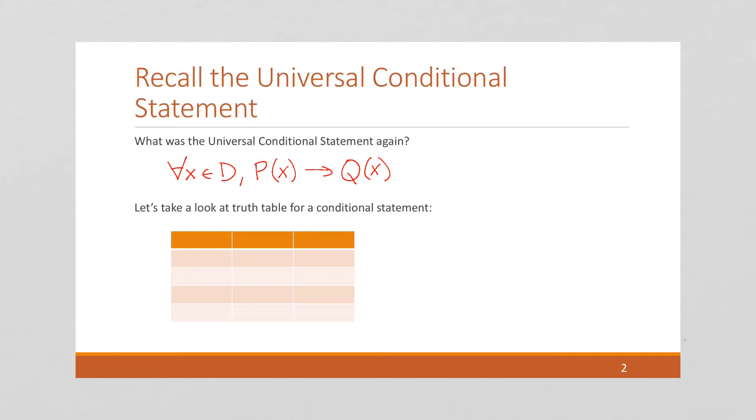So, an example of this might be: for all students, if a student is at our school, then that student lives in our state. Or, for all even numbers, if the number is greater than zero, then that number is greater than one. These are silly examples, but we can write most any statement as a universal conditional statement.